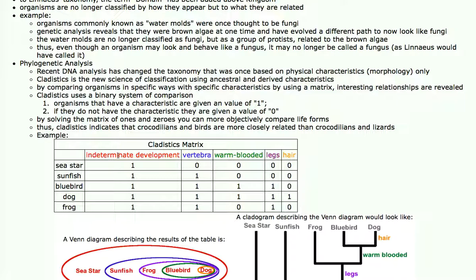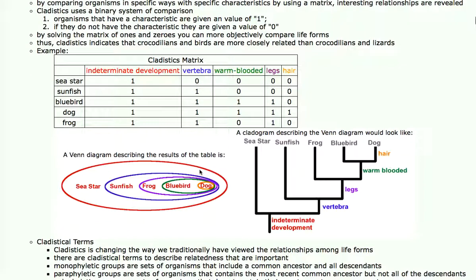We are comparing them on the features of indeterminate development, vertebra, warm-blooded, legs, and hair. If an animal has these, they get a 1, and if they do not have these features, they get a 0. If we compare the sea star, sunfish, bluebird, dog, and frog on these features, we find that all of them have indeterminate development, which means that when they were embryos very early on, you could actually damage them and they would recover and still grow into an actual living thing. Many simpler life forms cannot do that.